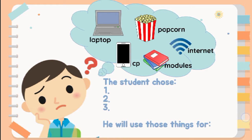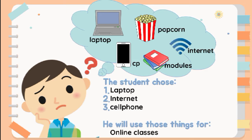He selected a laptop, internet, and cell phone as the most important items because he may use all three to attend his online classes. Although the modules are required, they can also be found on his laptop. Similarly,